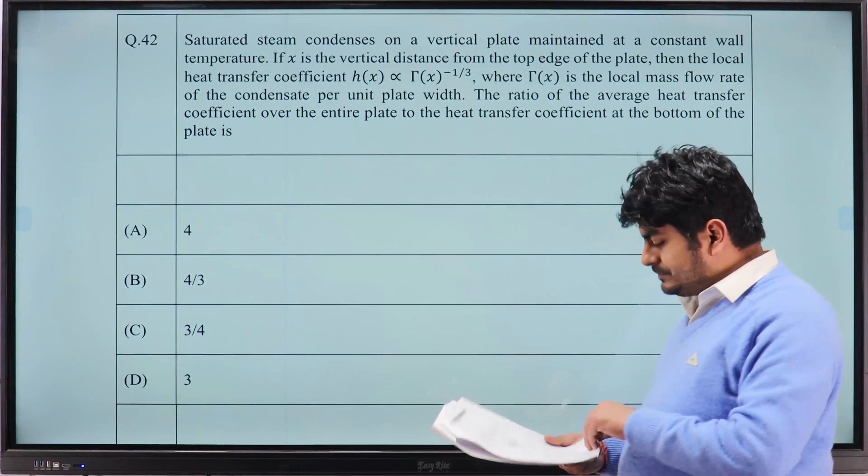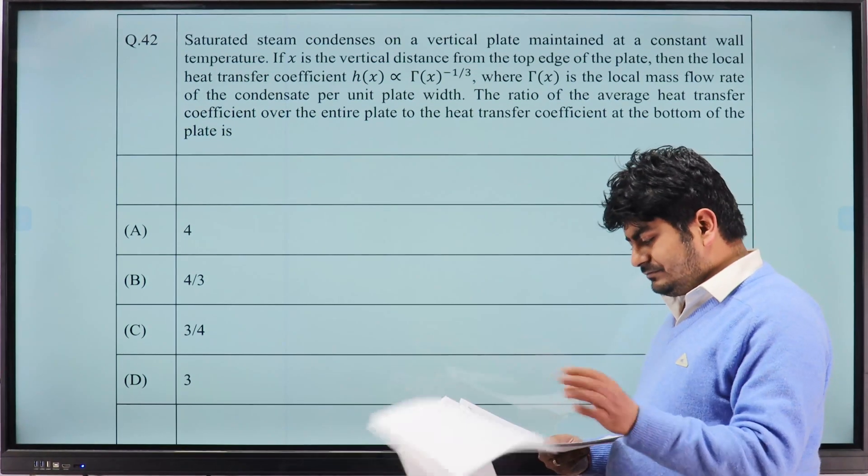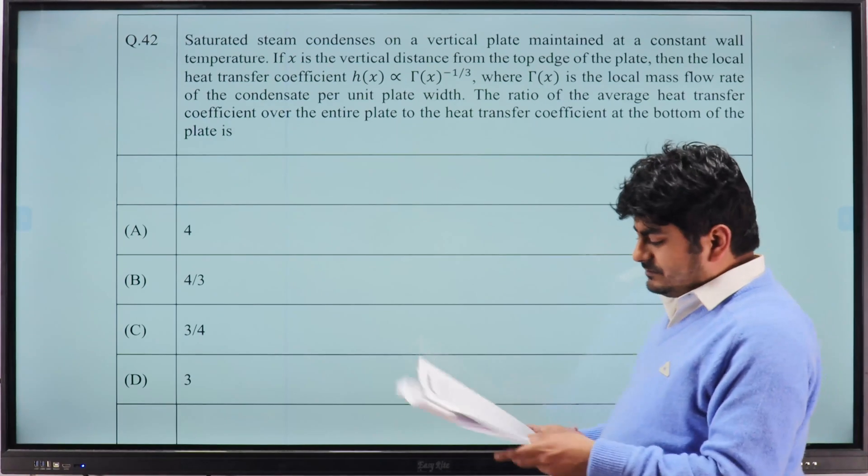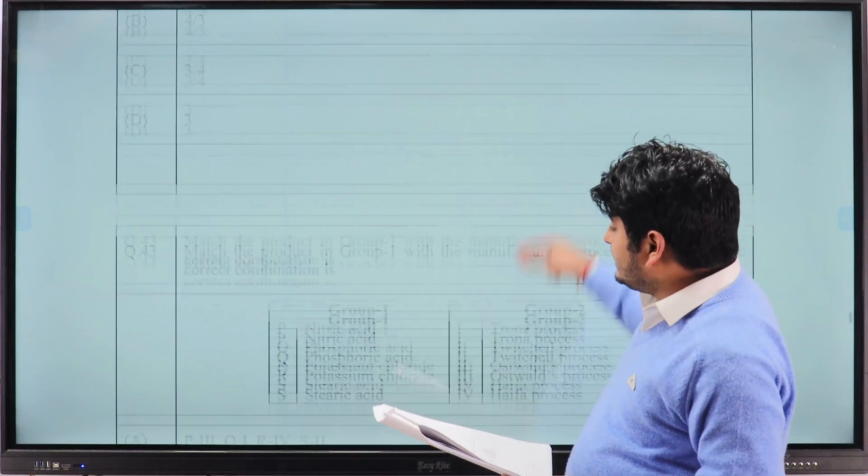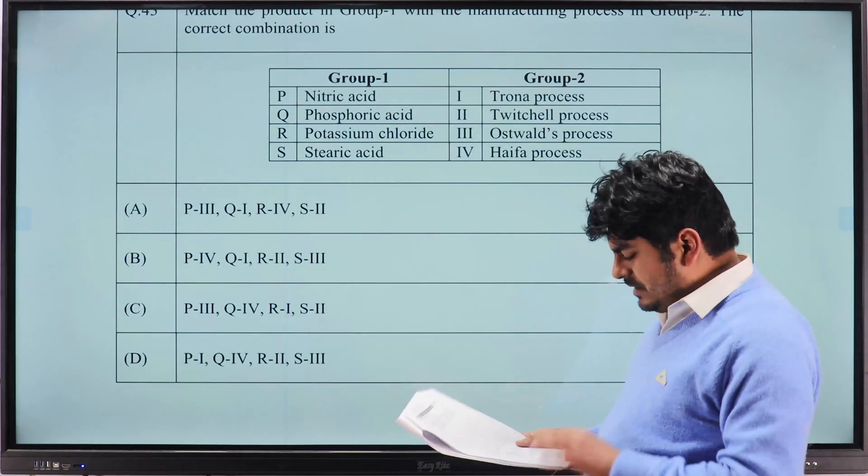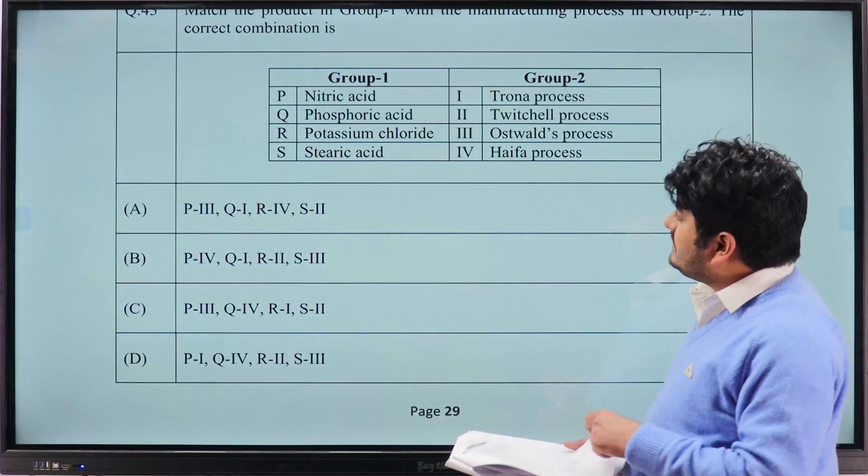Now question number 42, according to him option B, 4 by 3 is the correct answer. Now match the following here, option A is the correct answer.